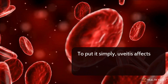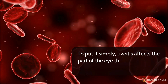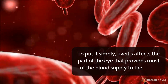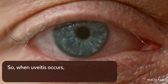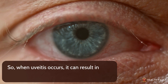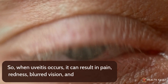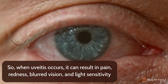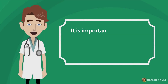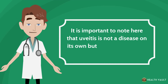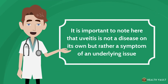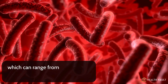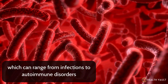To put it simply, uveitis affects the part of the eye that provides most of the blood supply to the retina. When uveitis occurs, it can result in pain, redness, blurred vision, and light sensitivity. It is important to note that uveitis is not a disease on its own, but rather a symptom of an underlying issue, which can range from infections to autoimmune disorders.